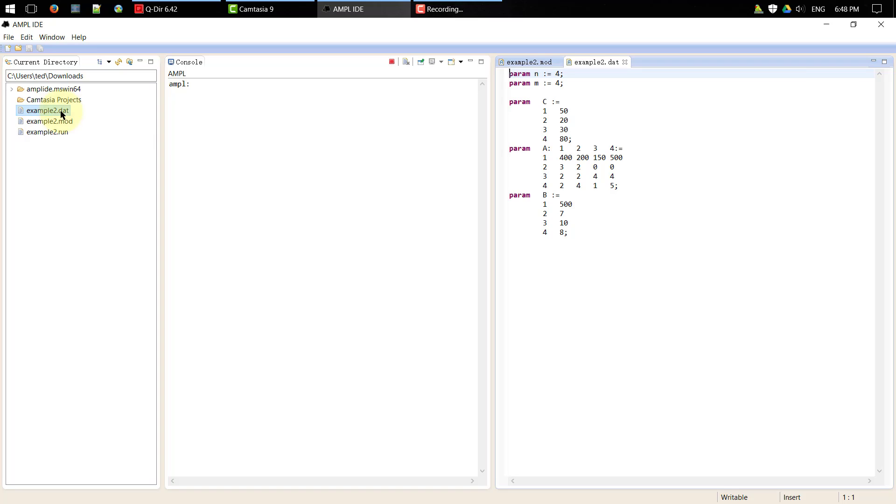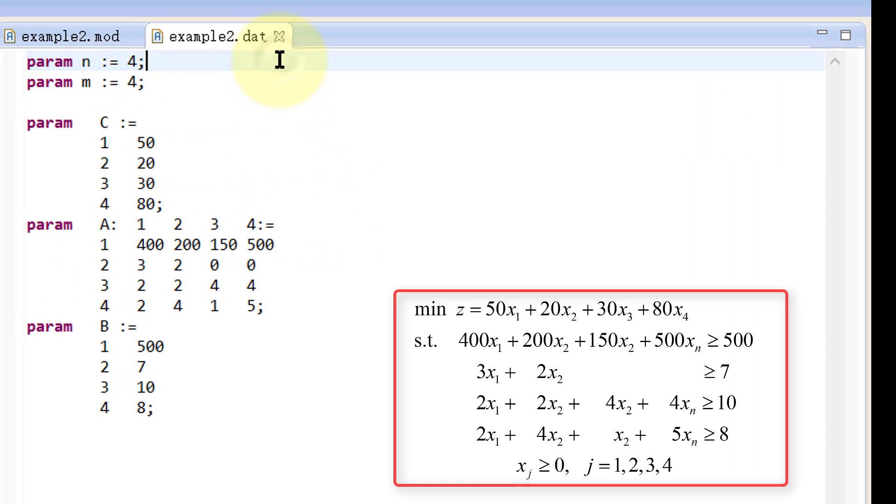Now open the data file, example2.dat by a double click. In this file, we assign specific values of the parameters we defined in the model file.